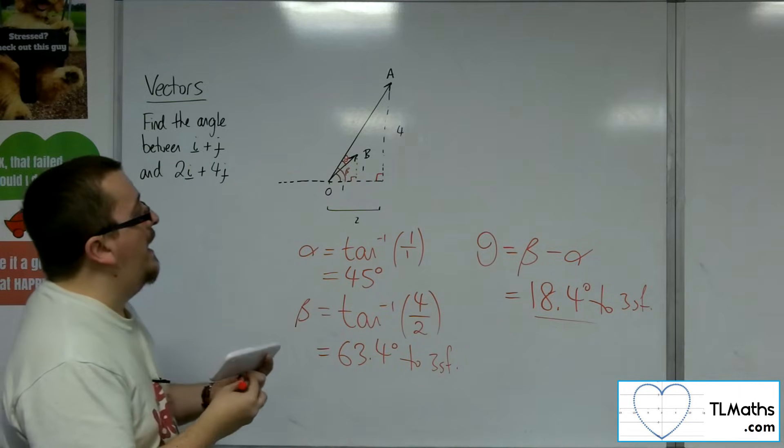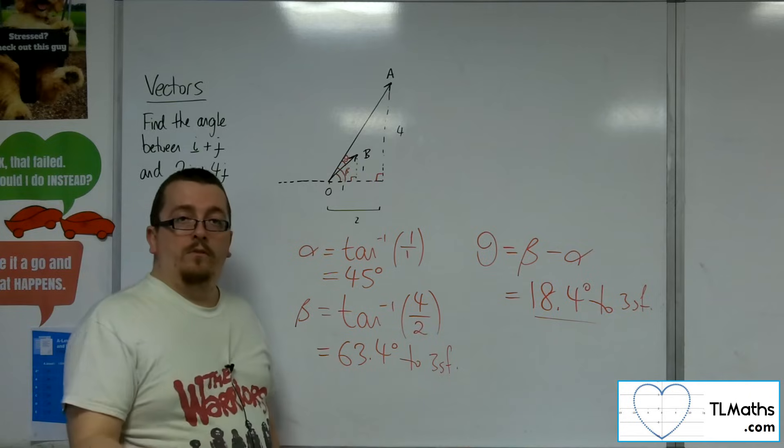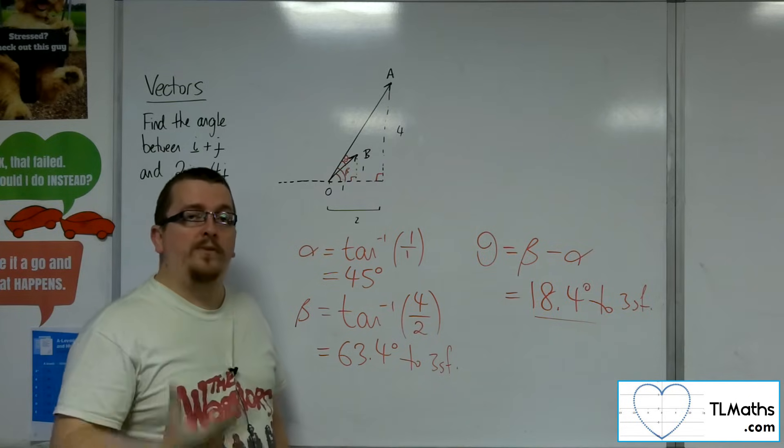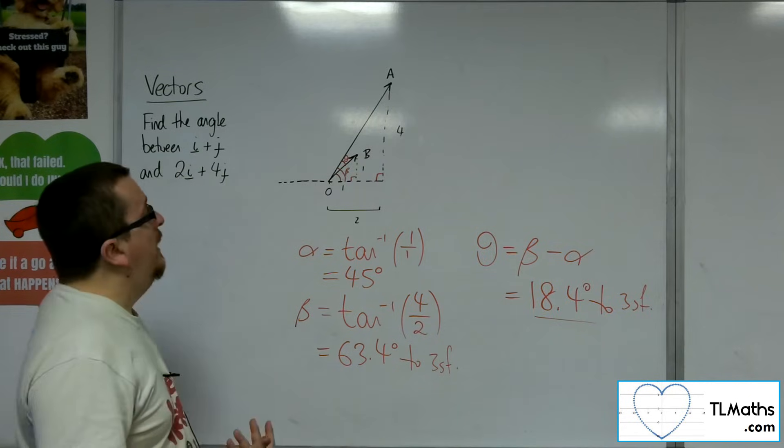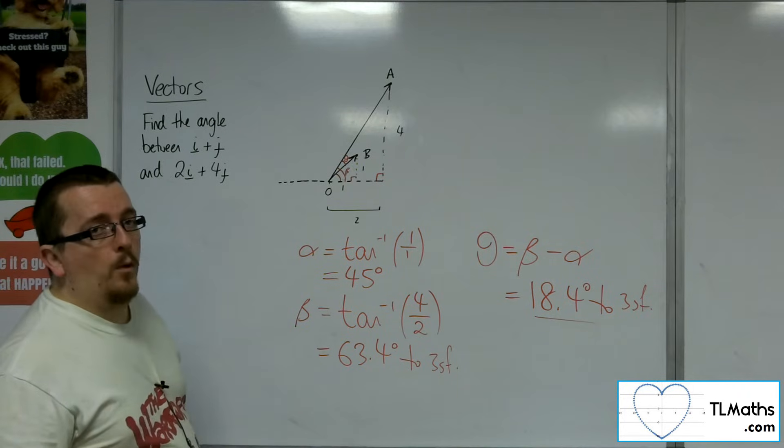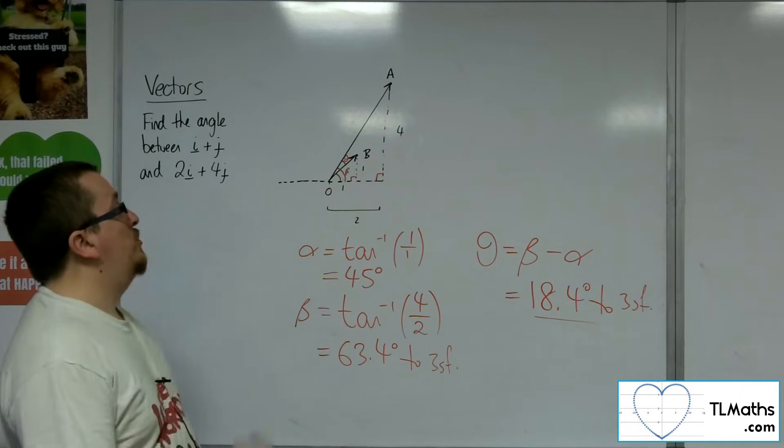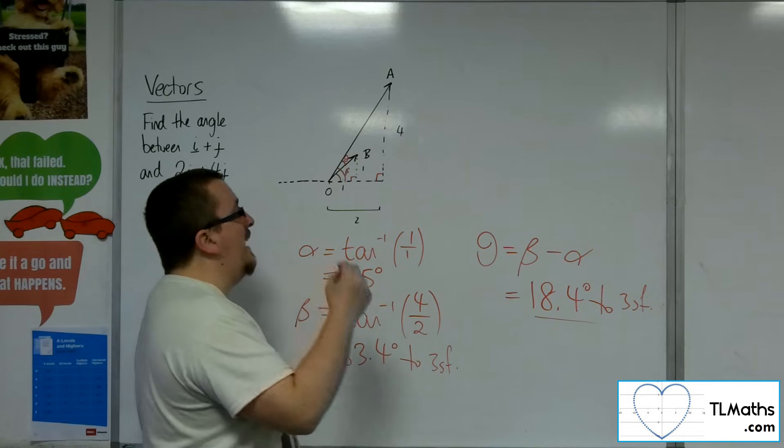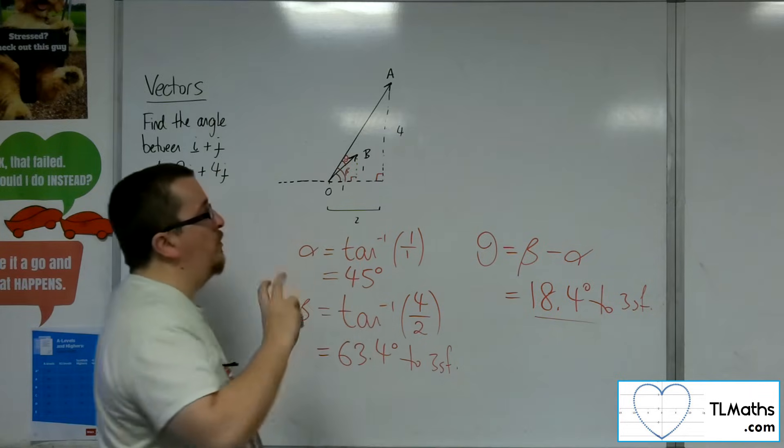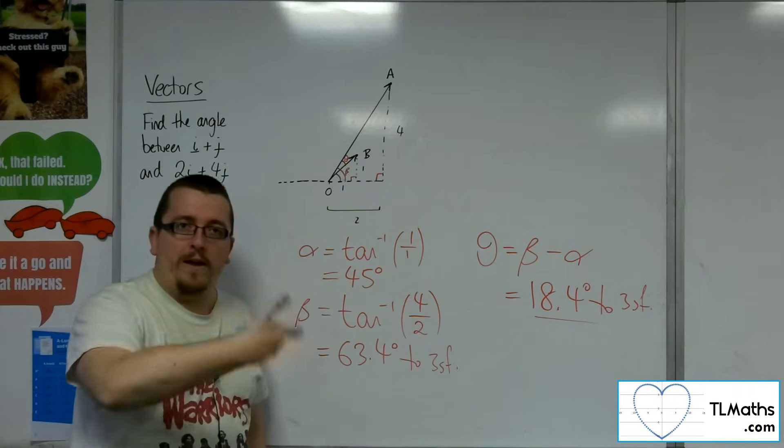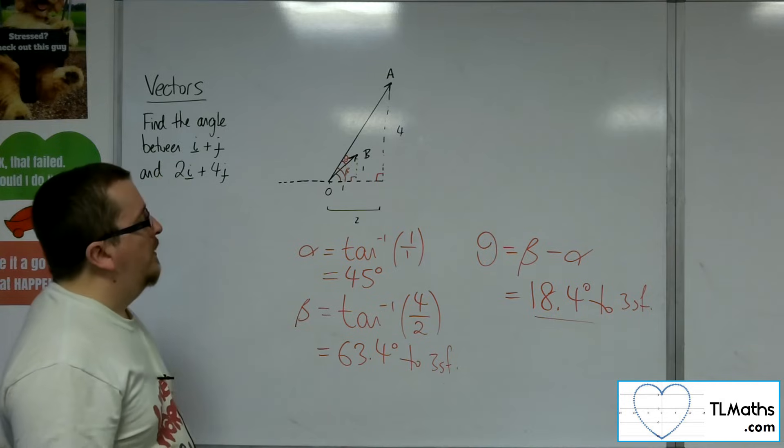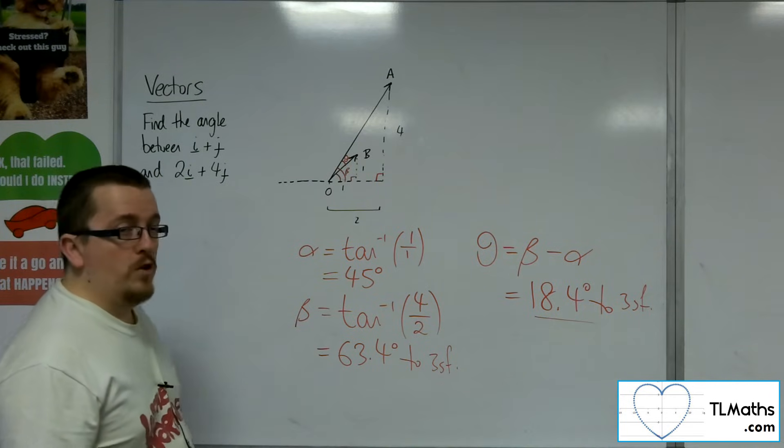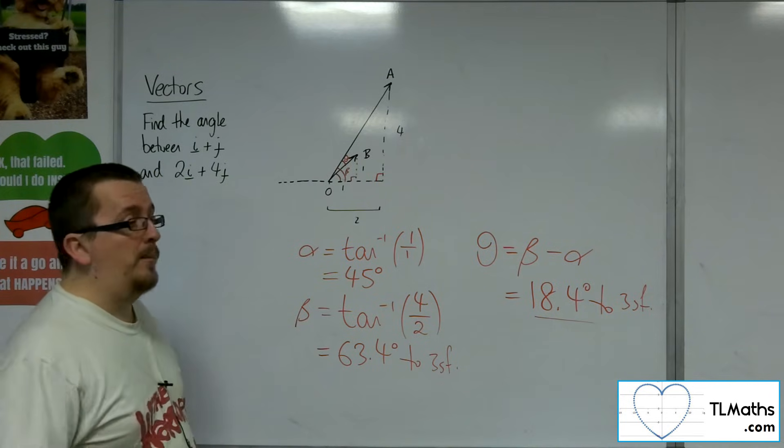So that is the easier way of the two. This will work for 2D vectors, regardless of the way that they are pointing, because you can always think about finding the angles required and then using your angle knowledge of angles around a point to find the angle required. And we're going to see some examples of that in the next video.